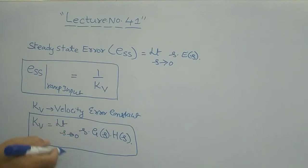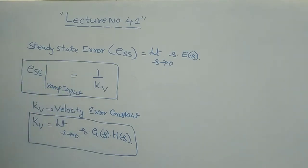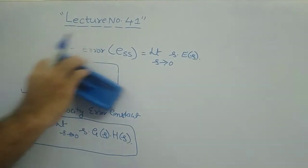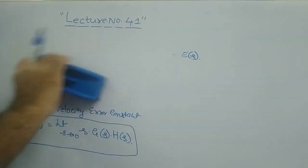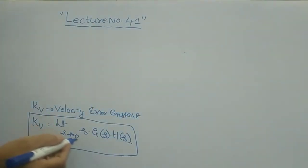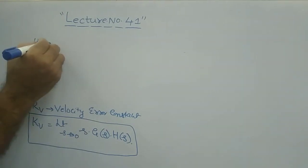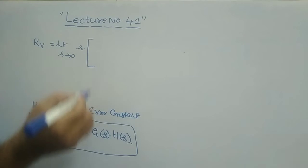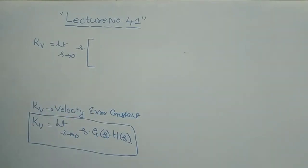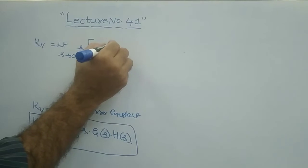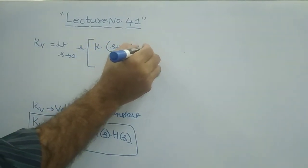Now we define the velocity error constant KV for the type 0 system. For a type 0 system, the form of G(s)H(s) has no s term in the denominator — meaning n equals 0, so s power 0 equals 1. The transfer function G(s)H(s) has a constant K in the numerator with zeros z1, z2, ... and poles p1, p2, ... as constants.